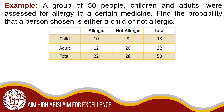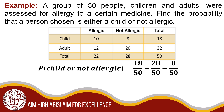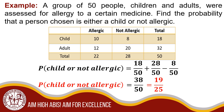A group of 50 people — children and adults — were assessed for allergy to a certain medicine. Find the probability that a person chosen is either a child or not allergic. The total number of children, allergic or not, is 18 out of 50. The total number of children and adults that are not allergic is 28 out of 50. So: 18 over 50 plus 28 over 50 equals 46 over 50, minus 8 (their intersection). Therefore, the probability of child or not allergic is 38 over 50, or in lowest terms, 19 over 25.